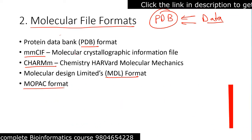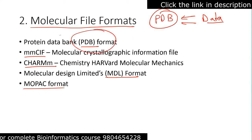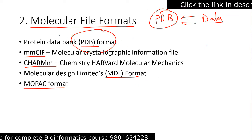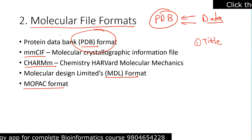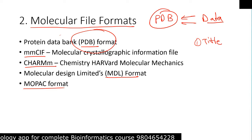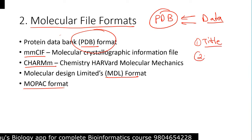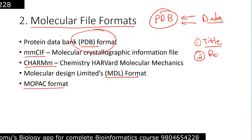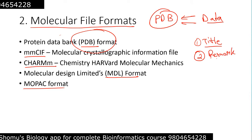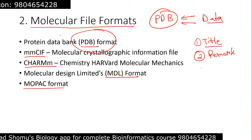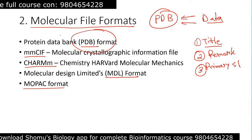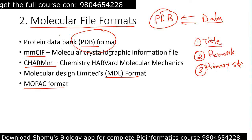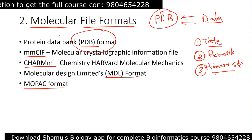The PDB format is the one we will deal with for 3D modeling. It has a title section containing information regarding record identification of the macromolecule, the source organism, name of the chemical compound, and related experiments. The second is a remark section, where experimental details and publication-related nomenclature are provided. Then we have the primary structure section, which provides information regarding the residues of each chain of macromolecules.